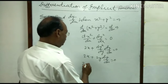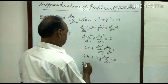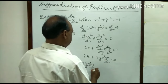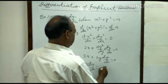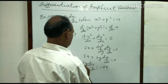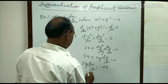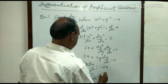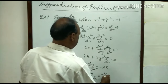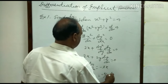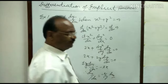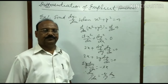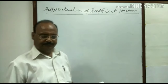We have to find the value of dy/dx. So 2y dy/dx is equal to minus 2x, and therefore dy/dx is equal to minus x over y. This is the answer. Now let us see the next question.